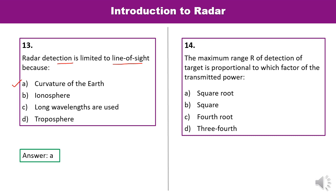Question 14: The maximum range R of detection of a target is proportional to which factor of the transmitted power? Recalling the radar range formula: R_max raised to the power 4 is proportional to Pt. So maximum range is proportional to the 4th root, i.e., Pt raised to the power 1/4. C is the correct answer.